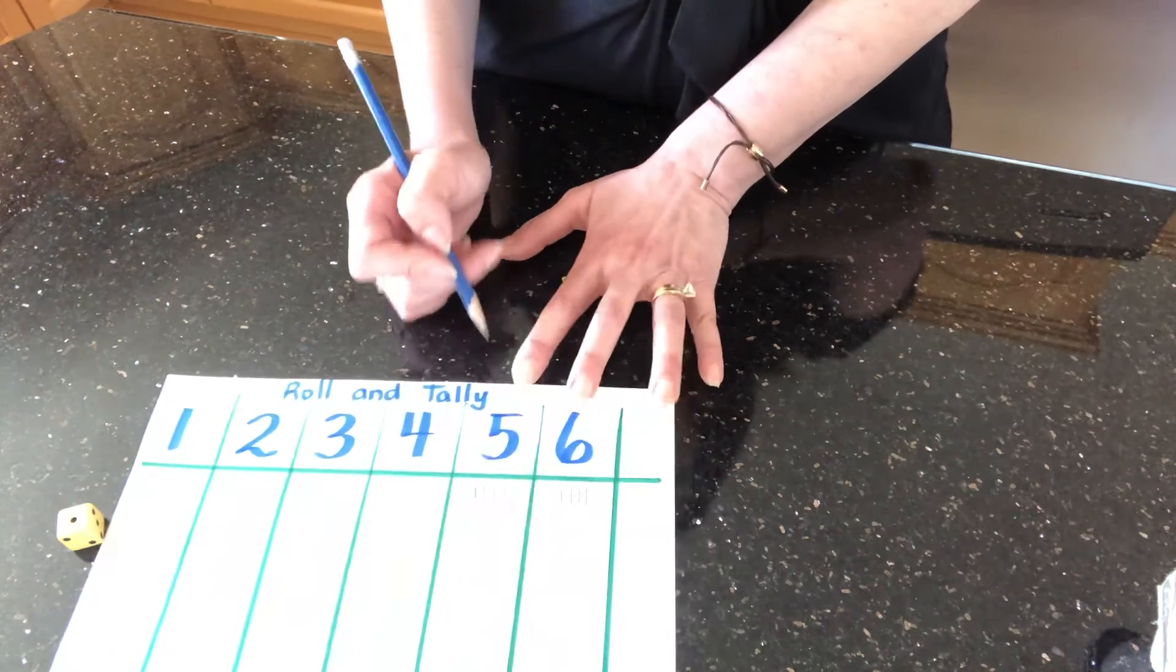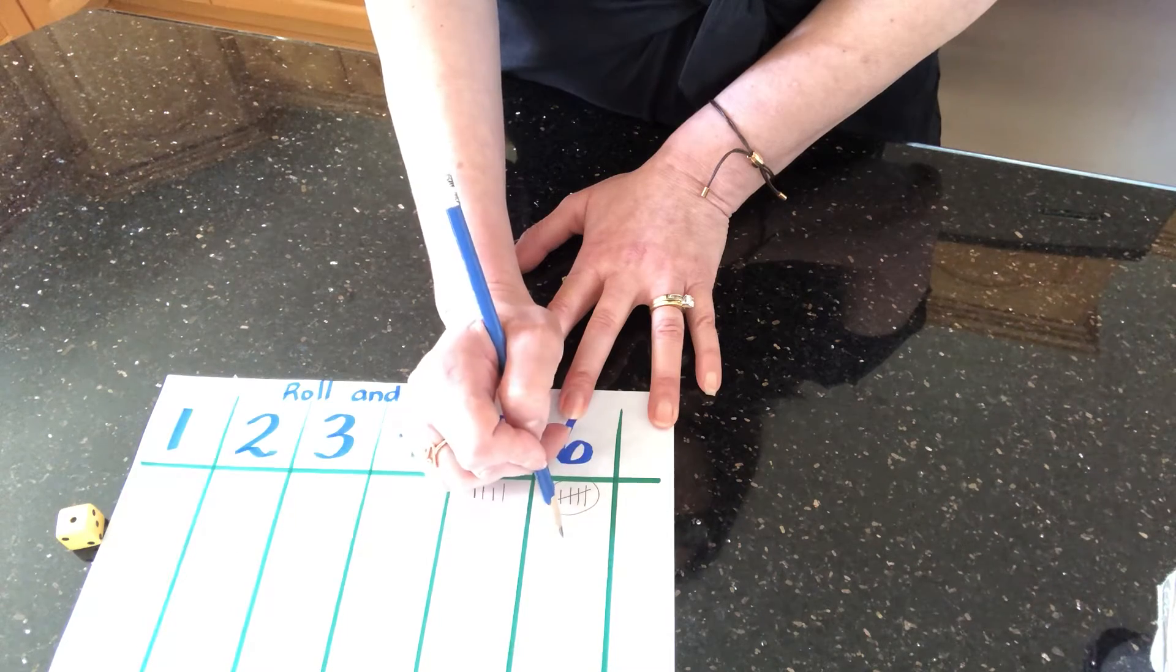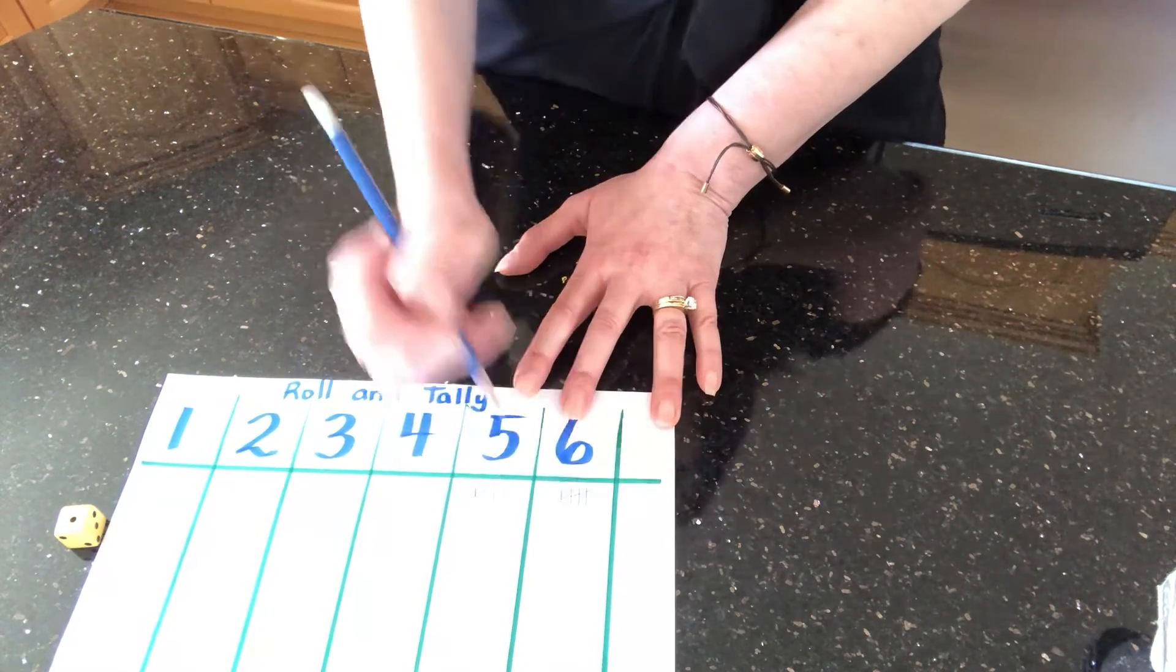And what does six have? Five. Down and around and a half. And that's five.